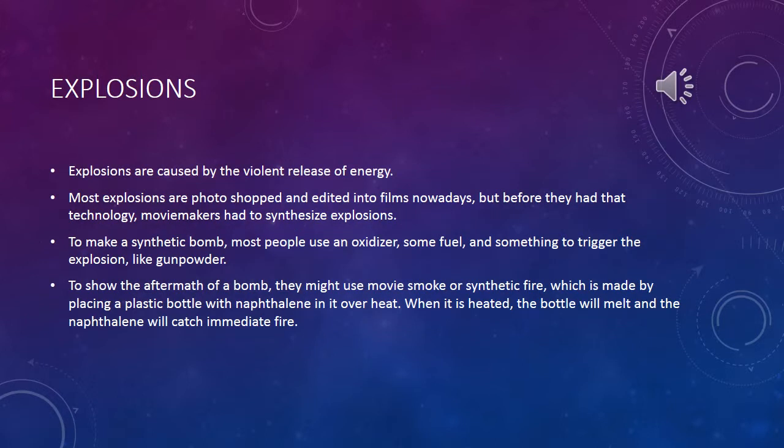Explosions. Explosions are caused by the violent release of energy. Most explosions are photoshopped and edited into films nowadays. But before they had that technology, movie makers were forced to make synthetic explosions. To make a synthetic bomb, most people use an oxidizer, some fuel, and something to trigger the explosion, like gunpowder or TNT. To show the aftermath of a bomb, they might use movie smoke or synthetic fire, which is made by placing a plastic bottle with naphthalene in it over heat. When the bottle is heated, the bottle will melt and the naphthalene will catch immediate fire.